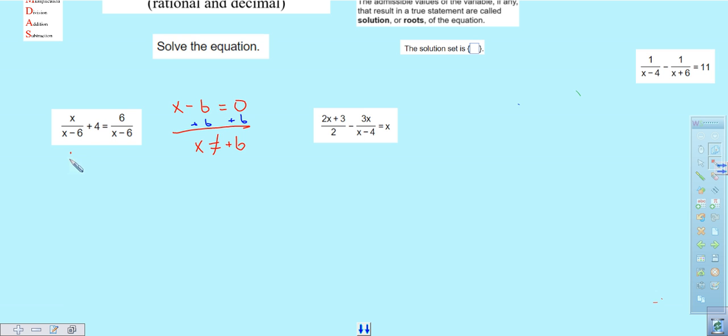So this would become 6 over 6 minus 6 plus 4 equals 6 over 6 minus 6. And at that point, what would happen is this would become 6 over 0 plus 4 equals 6 over 0, and that's what we call undefined.